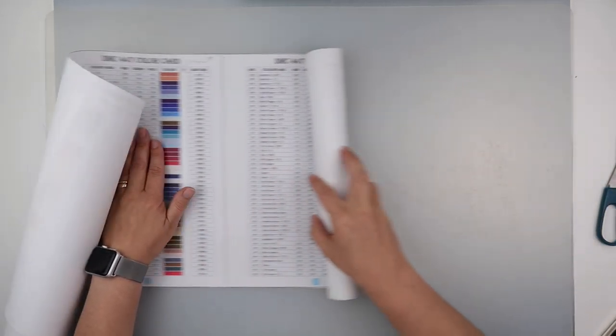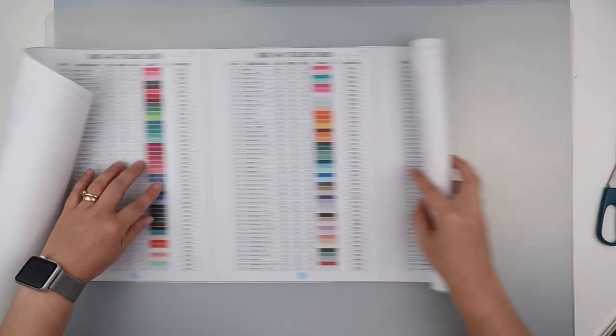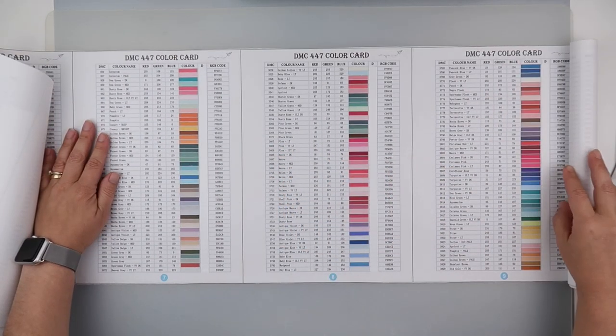And this is basically 447 colors. We're getting up to the 900s here, and then we're going all the way across.